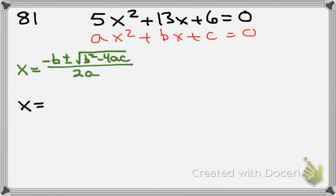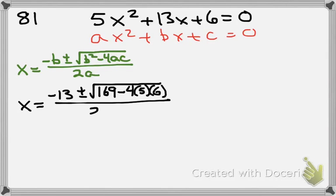So X equals the opposite of B, so that would be negative 13, plus and minus the square root of B squared, which would be 169, minus 4 times A times C, all over 2 times A, which is 5.